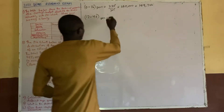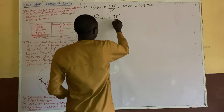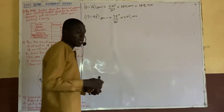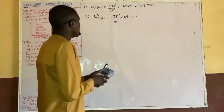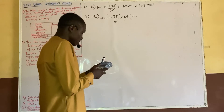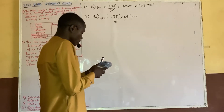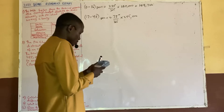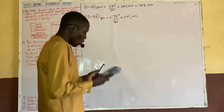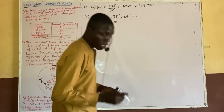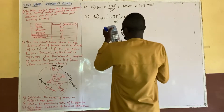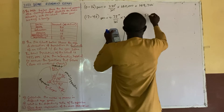We have a 75 degree sector angle for the next group, over 360 times 245,000. So when we work that out, 75 divided by 360 times 245,000, we get 51,041 persons.